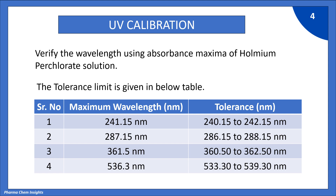For the first 3 wavelengths, the tolerance limit is plus or minus 1 nm, and for the 4th wavelength (536.30 nm) the tolerance limit is plus or minus 3 nm. If the absorption comes within the tolerance limit the test is passed, and if it comes beyond the tolerance limit the test will be failed.